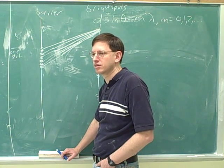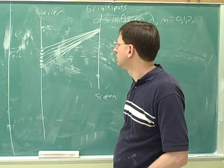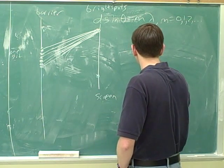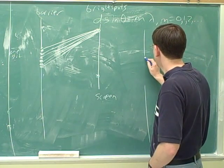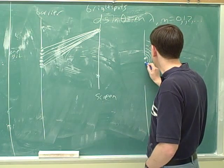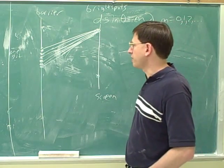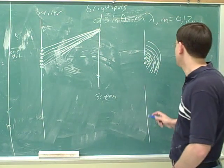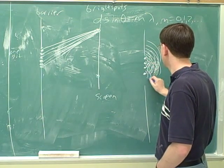Each point is like it's generating its own wave. Here's the wavefront — a point on the wave is generating its own ripples, its own waves. And then this point over here is generating its own waves. So each point on the wavefront acts as a point source for spherical waves.